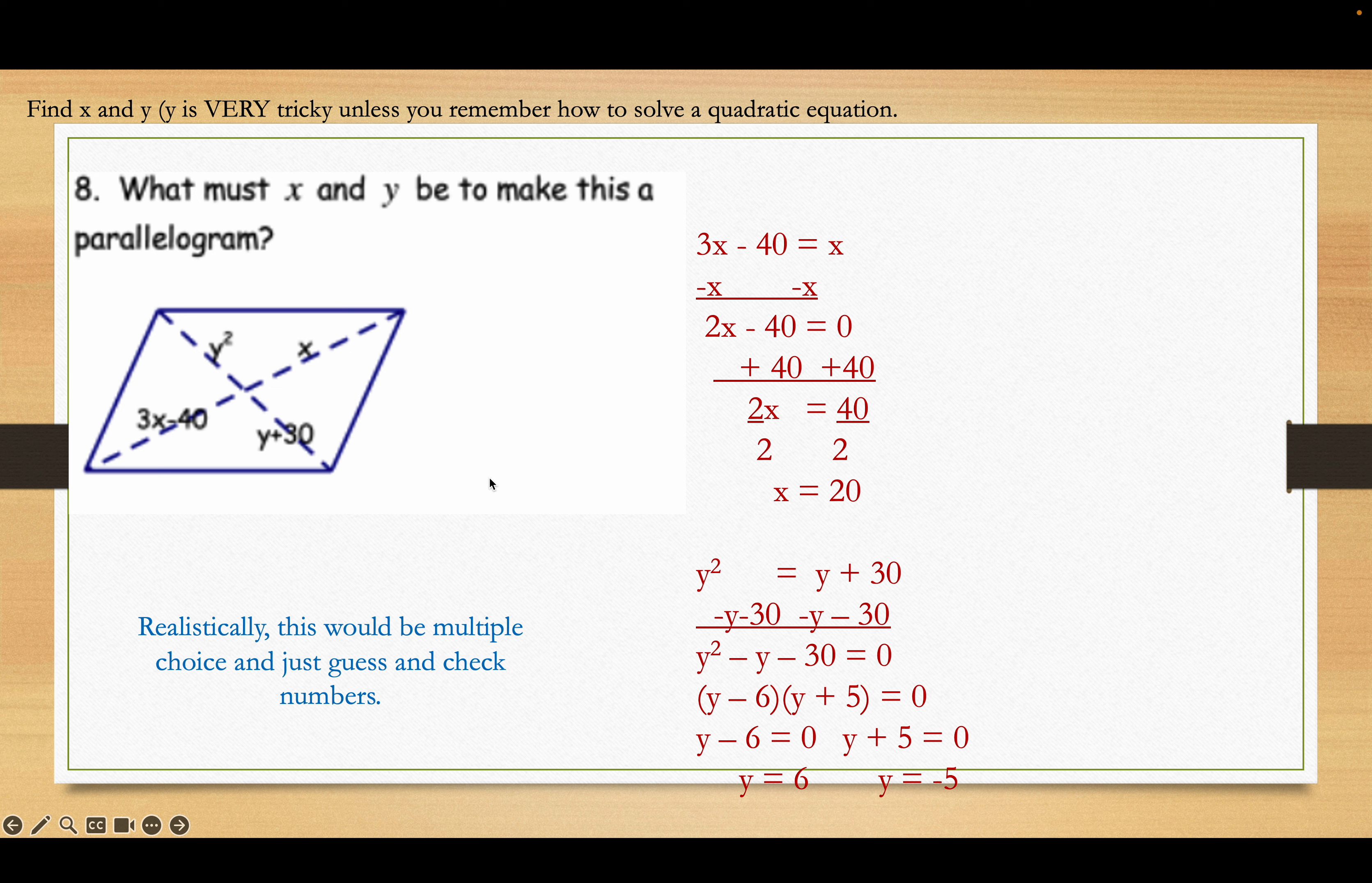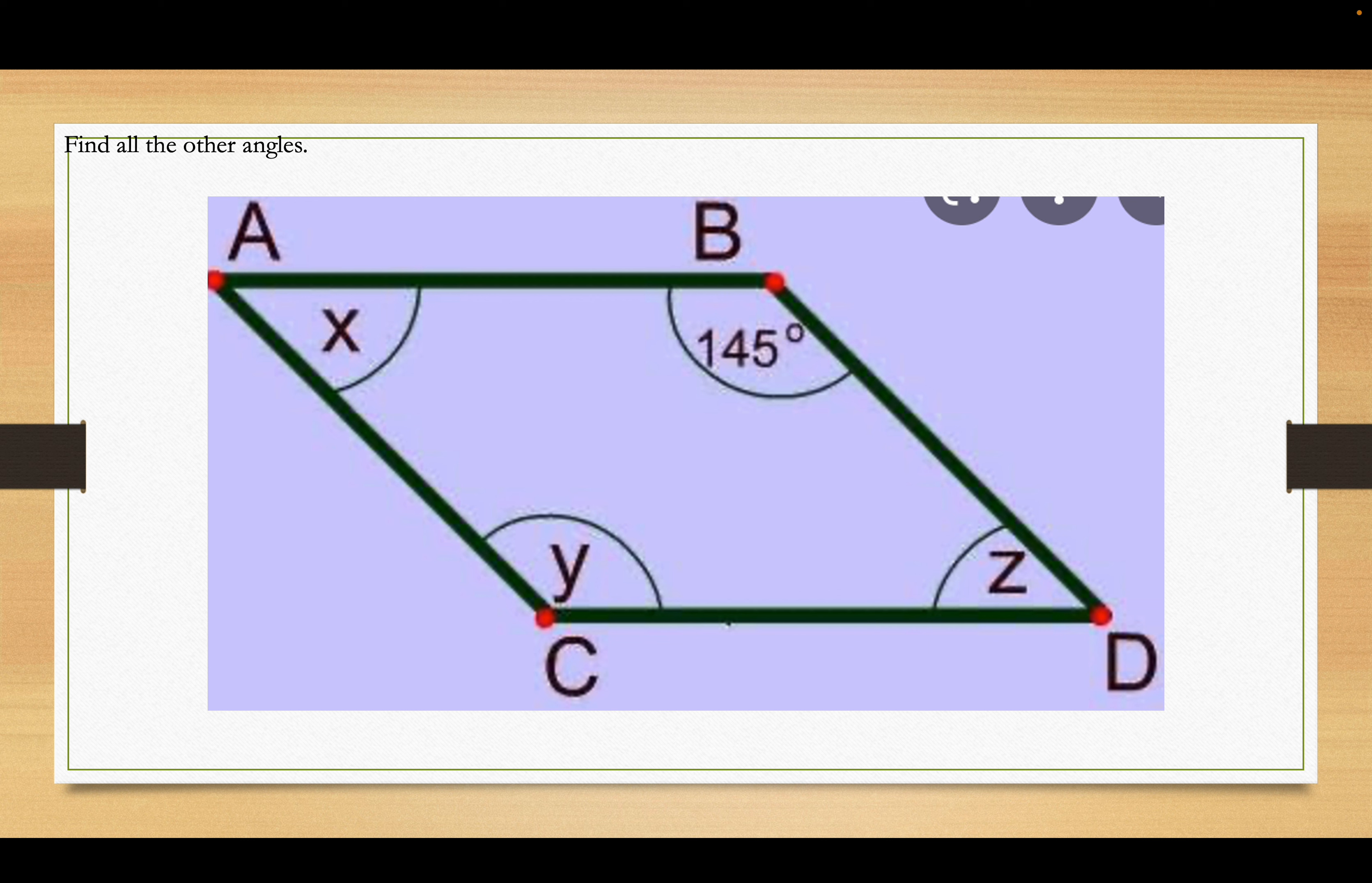Find all the other angles. Remember, in a parallelogram, these are some of those properties you took a picture of. Opposite angles are congruent, and consecutive angles are supplementary. Okay, so, that means angle Y is going to equal, or angles C and B, 145, Y, all of that. They're all the same, because they're opposite angles. Consecutive angles are going to add up to 180 degrees, so 180 minus 145 is 35. That makes X35, which makes Z35.